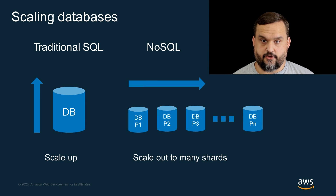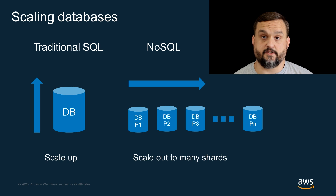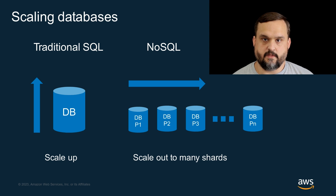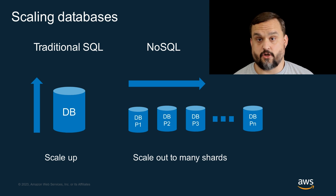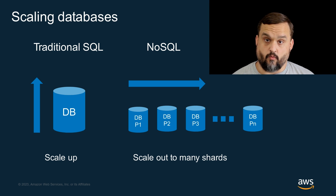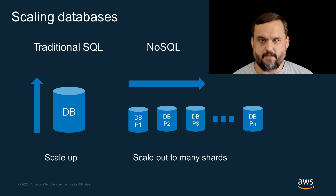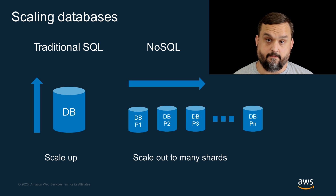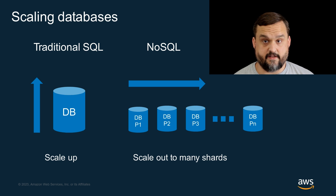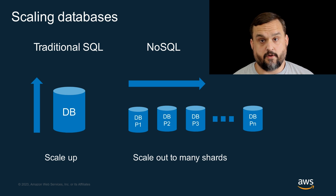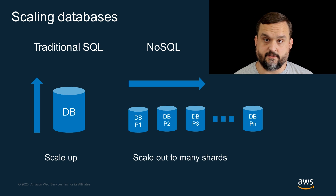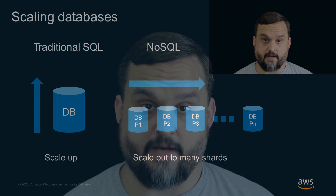If you imagine scaling a traditional relational database, you'd add additional resources — CPU, memory, disk — to that database as your needs increase. Eventually, you hit a wall, though. You can't add any more resources. At that point, you have to start thinking about sharding or partitioning that database into multiple databases, moving a portion of your data to one and a portion to the other. DynamoDB takes that idea and runs with it. We take the idea of partitioning and build it into the database and into the data model. Every item that you write to DynamoDB requires a partition key, and that's the key we use to decide where data gets split into the different partitions in the background.